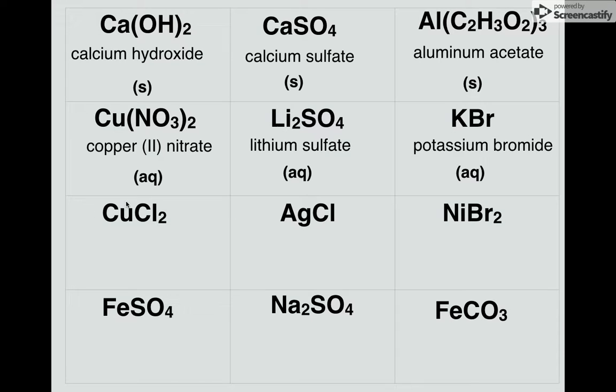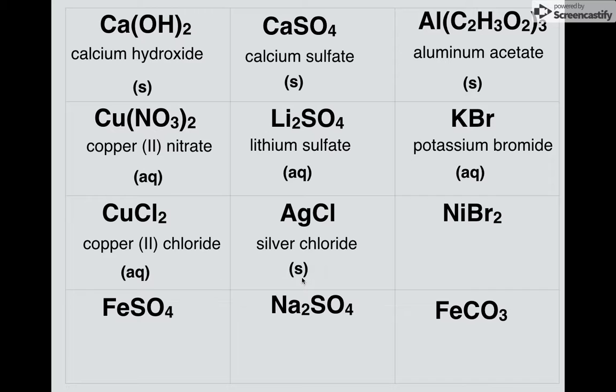CuCl2. So again, that 2 comes from here. That's copper 2, so copper 2 chloride. That dissolves in water. AgCl, that's silver chloride. That doesn't dissolve in water. That's insoluble. I've got nickel in the 2, so that would be nickel 2, and that would be bromide. So nickel 2 bromide. That dissolves in water.